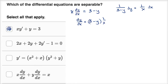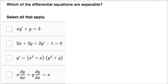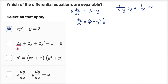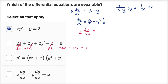Now let's do the second one in a slightly different color. If I subtract two x from both sides, subtract two y from both sides, and add one to both sides, I'm going to get two times the derivative of y with respect to x equals negative two x minus two y plus one.